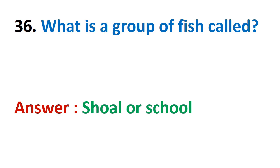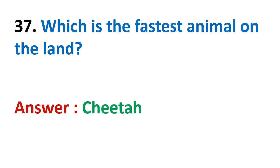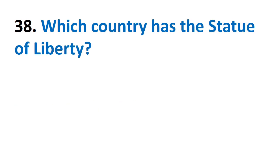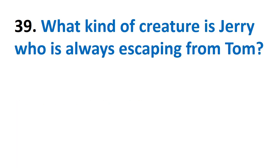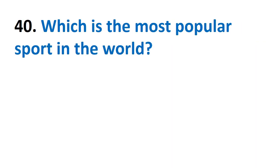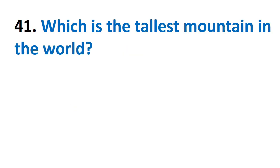What is a group of fish called? School. Which is the fastest animal on land? Cheetah. Which country has the Statue of Liberty? United States. What kind of creature is Jerry who is always escaping from Tom? Mouse.